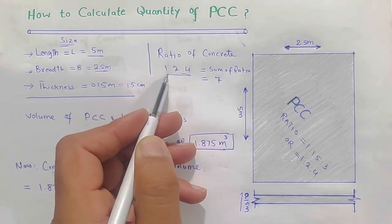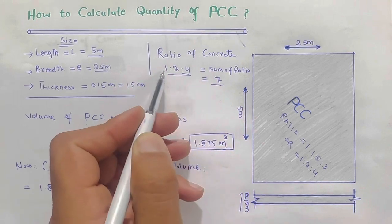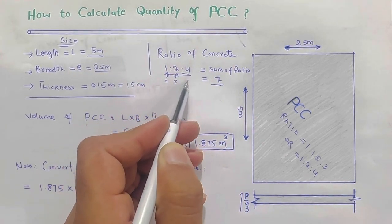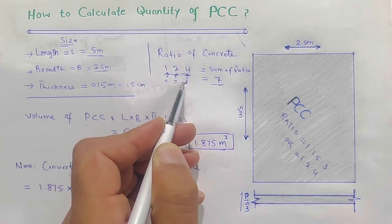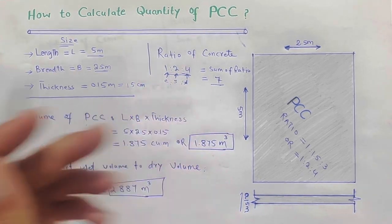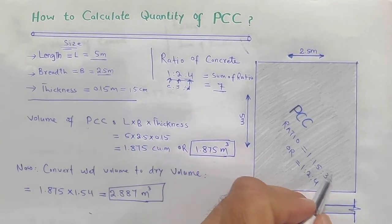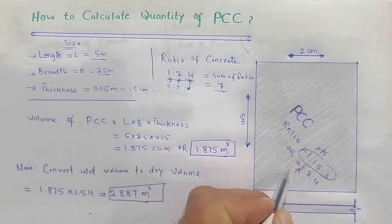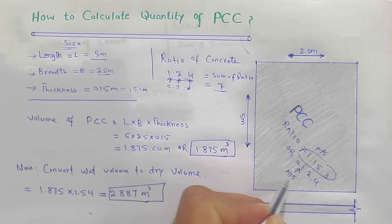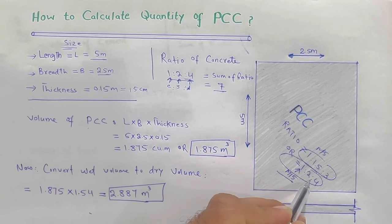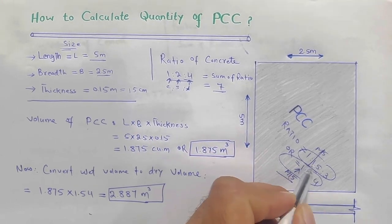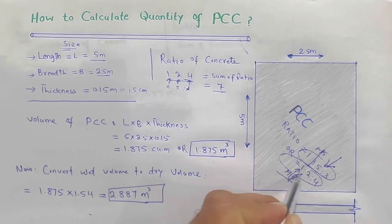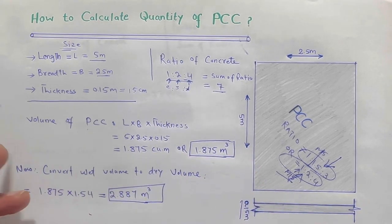We are using a concrete ratio of 1:2:4, where the sum of ratio is 7 - 1 part is cement, 2 parts are sand, and 3 parts are aggregate. It depends on you if you are using M15 grade or M20 grade. For M20 the ratio is 1:1.5:3, and for M15 the ratio is 1:2:4.